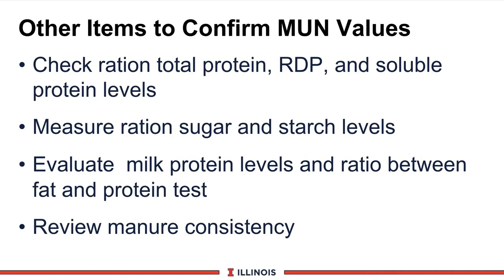If the MUN is high or low, what should you do? If MUN is very high, look at total protein in the ration, rumen-degradable protein, and soluble protein numbers — are those too high? Conversely, if MUN is low, are those numbers on the low side? Also look at ration sugar and starch levels, because that will jumpstart rumen microbes. You may be wasting nitrogen in the rumen because there isn't enough fermentable carbohydrate for the microbes to capture it.